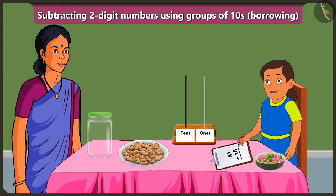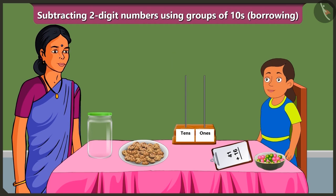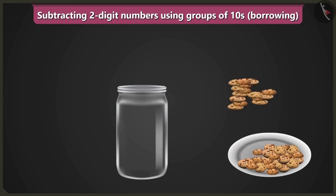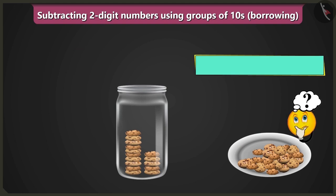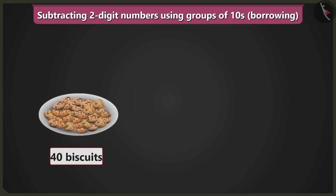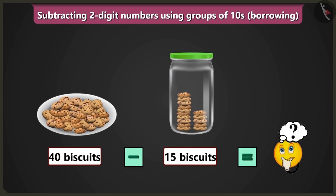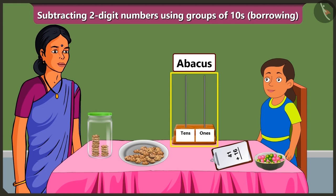Oh wow Bubbly, you are studying with the help of Abacus. Yes, Mummy. Look Bubbly, there are forty biscuits in this plate. If I fill this jar with fifteen biscuits, then how many biscuits would remain in this plate? To know this, we would have to subtract or minus fifteen biscuits from forty biscuits. But can you solve the subtraction without writing, just by borrowing with the help of this Abacus?